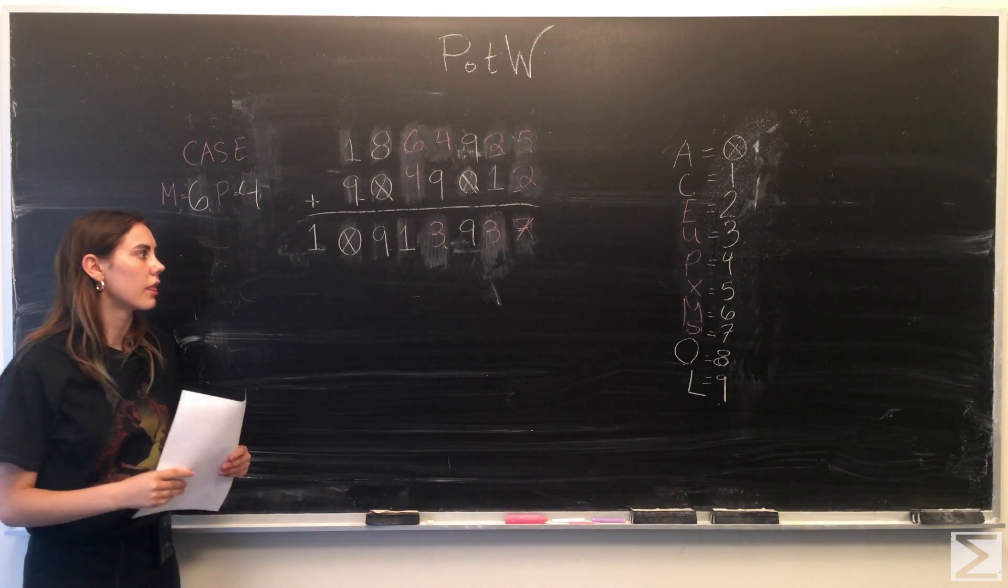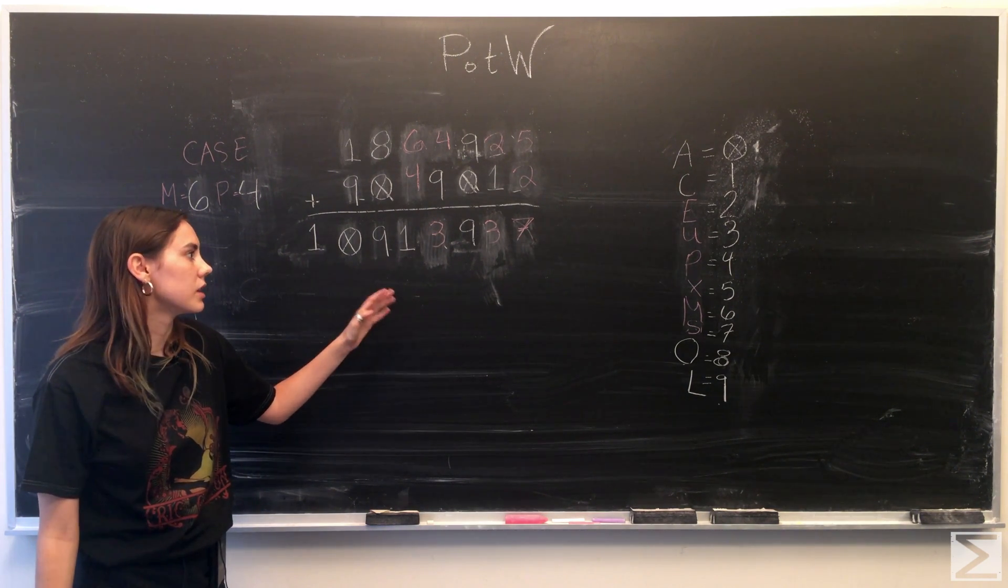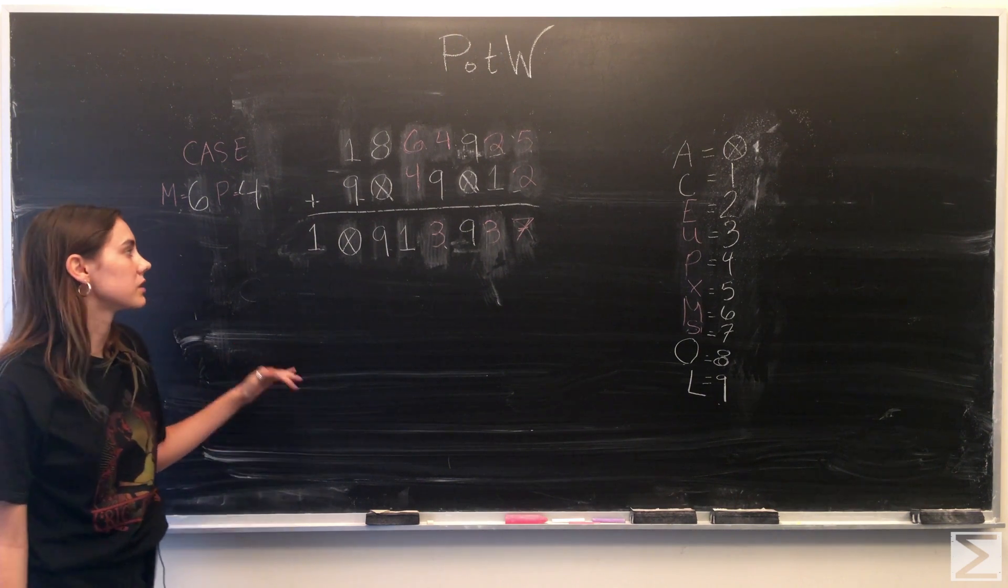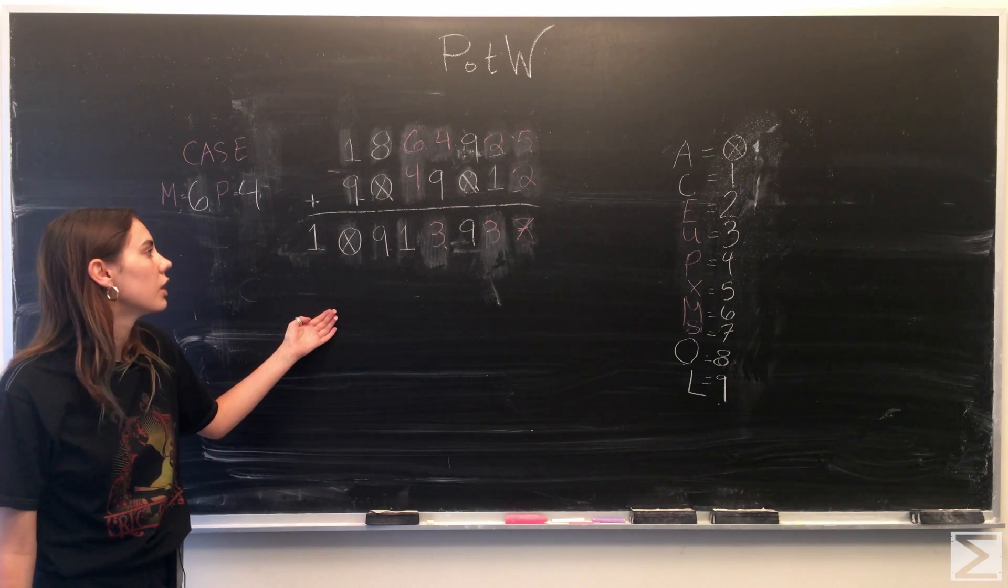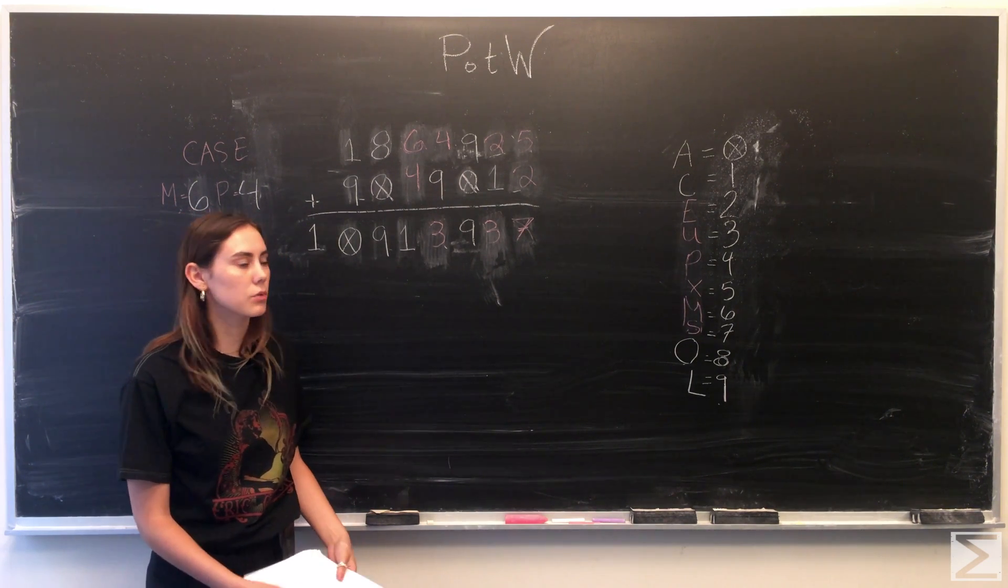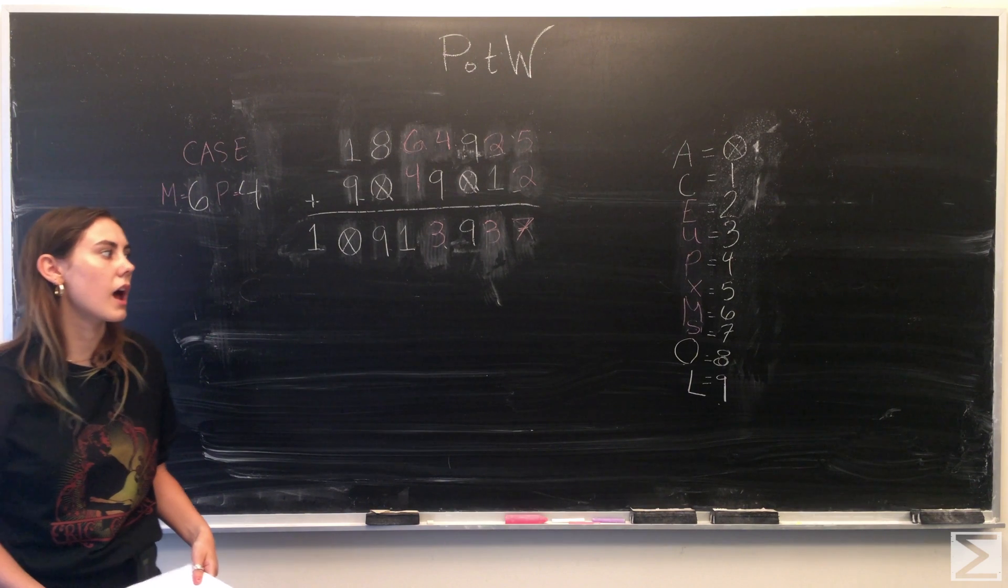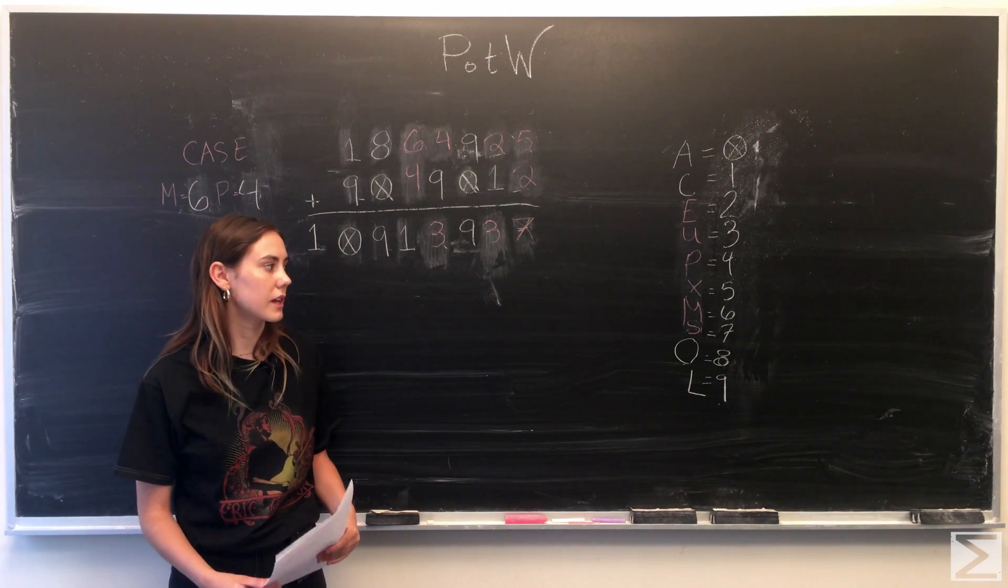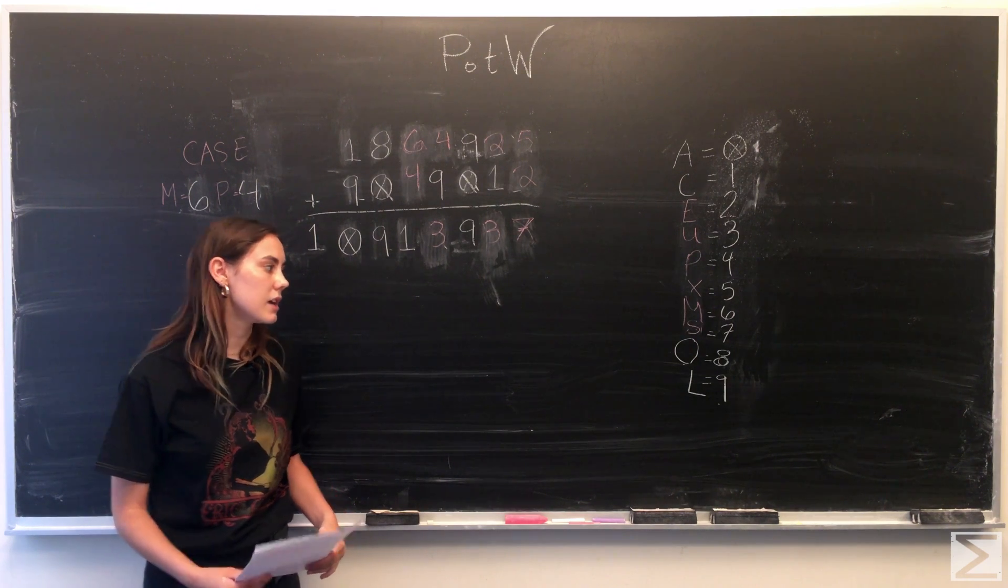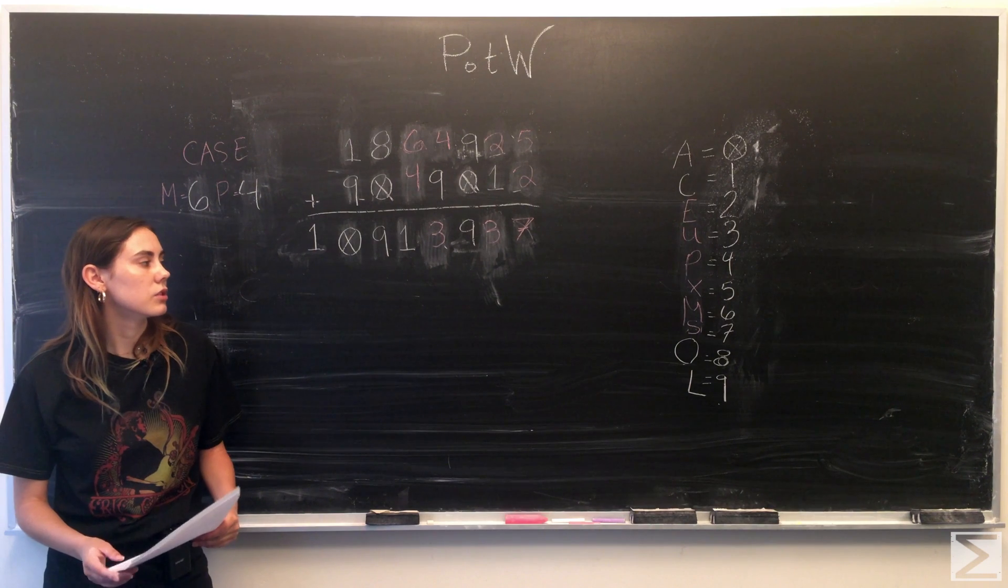So there you have it. That's the equation that uses different numbers to make the original COMPLEX plus LAPLACE equal to CALCULUS equation true. We have A equals 0, C equals 1, E equals 2, U equals 3, P equals 4, X equals 5, M equals 6, S equals 7, O equals 8, and L equals 9. That's the solution.